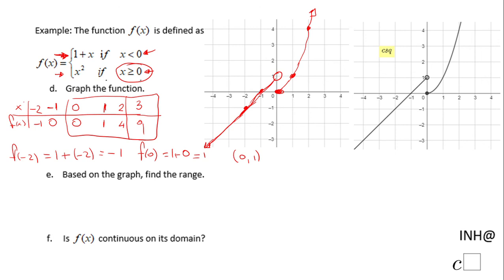Let's also evaluate the first piece at x equals 0 — even though it says x less than 0 — to find where the hole is: 1 plus 0 is 1, so the point (0, 1) gets an open hole. That gives us the full graph of the piecewise function, and here's a cleaner version of that graph.